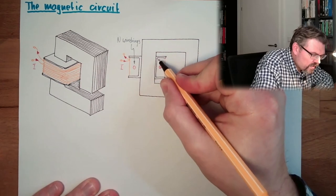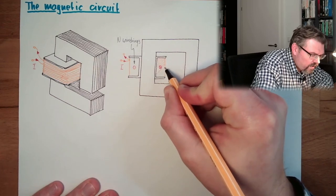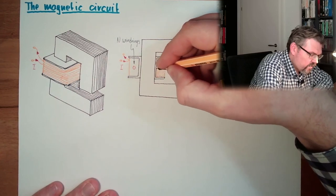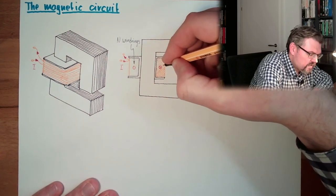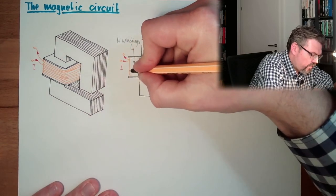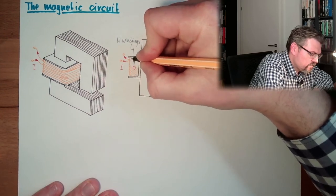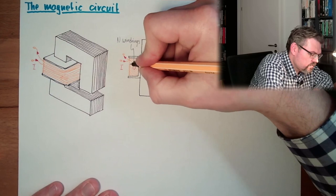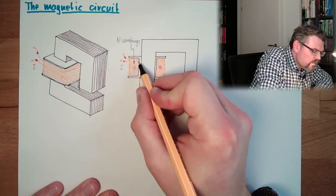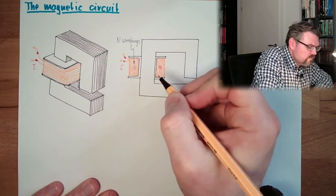It's not only one big copper block. There are a lot of wires inside. I try to show this by making this checked. So there are a lot of wires inside here. Actually, like written here, we have n windings.